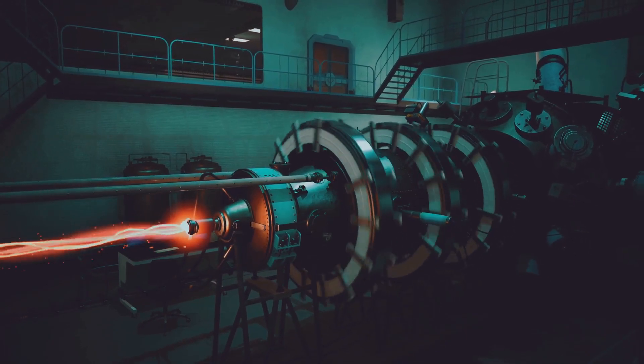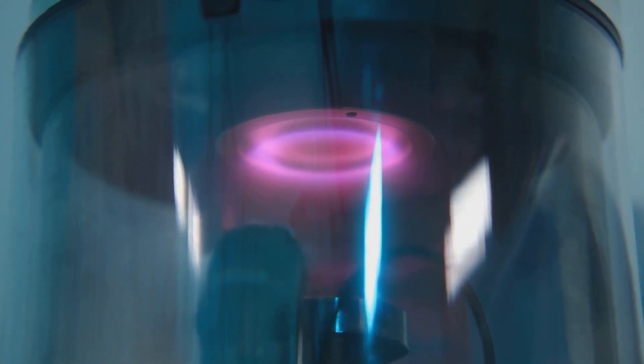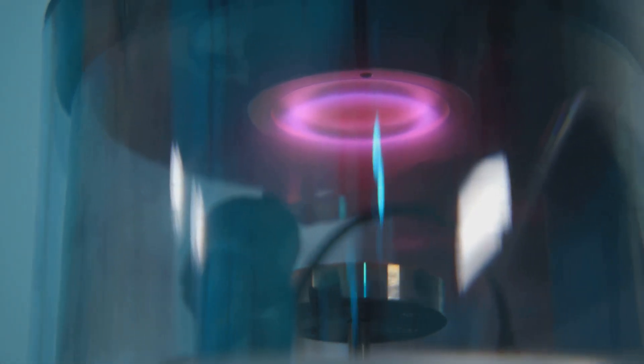Scientists have used the Z-machine to simulate the effects of a nuclear detonation on asteroid-like materials. By bombarding these materials with intense X-ray pulses, they've been able to study the processes of vaporization and momentum transfer.